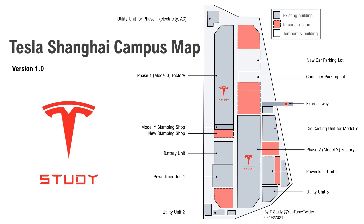This is the expressway currently under construction, linked to the highway. In the future, delivery of parts by container and shipping out new cars and empty containers will be much easier. This building is the die casting unit for Model Y, and the three Gigapress machines are in this building. I have a video about this one in my channel as well — welcome to take a look.